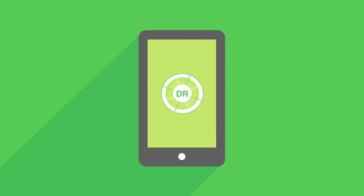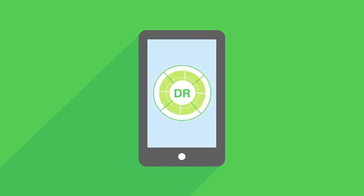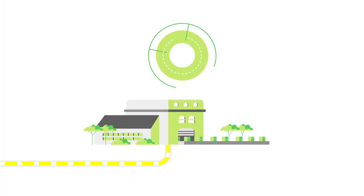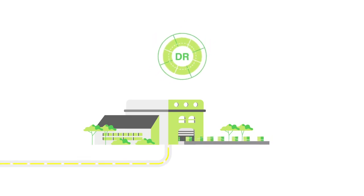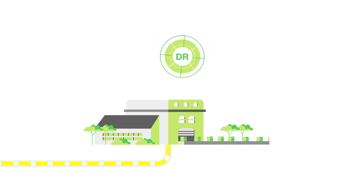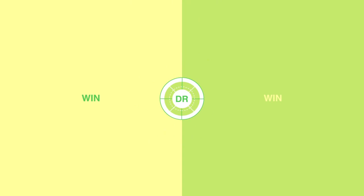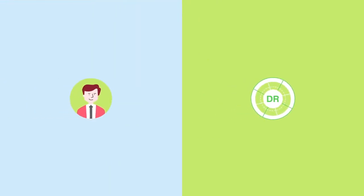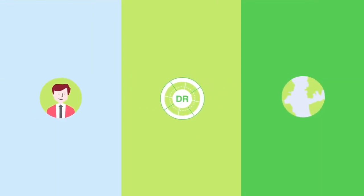Here's what that looks like in action. Engie contacts Richard to let him know there's a DR event coming up. Richard temporarily adjusts his production speed to lessen his energy consumption. The DR event ends, and Richard readjusts his production speed. Engie makes its payment to Richard's company — win-win. Even better, Richard's flexibility benefited his company and the planet by helping make the transition to renewables easier and smoother. Win-win-win.